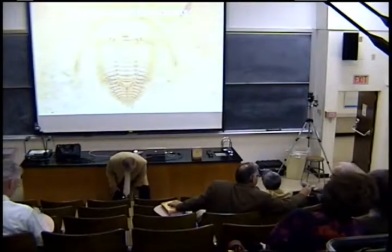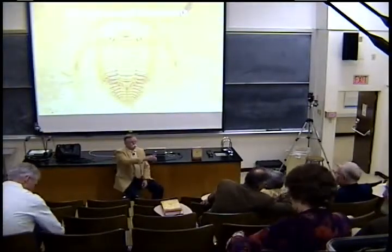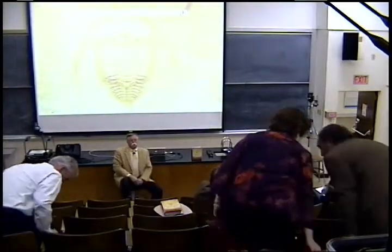A question from the audience: Meyer attributes Gould and Eldredge to the development of punctuated equilibrium — but where do you place the contribution of French philosopher Teilhard de Chardin? The questioner's understanding is that Teilhard de Chardin, who lived before Gould and Eldredge, may have come up with this idea of evolution by jumps rather than gradualism.